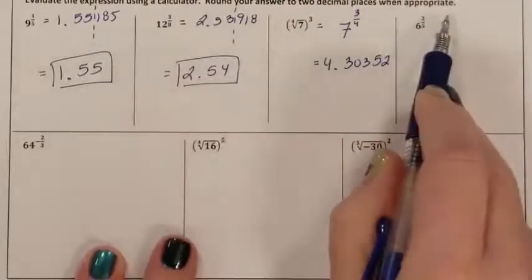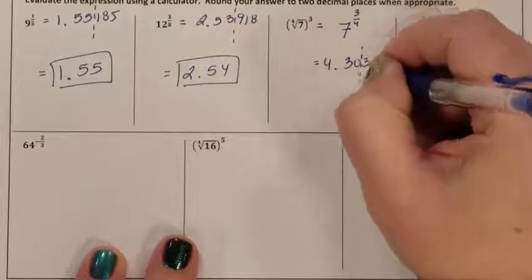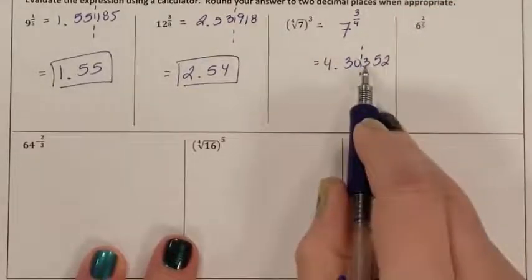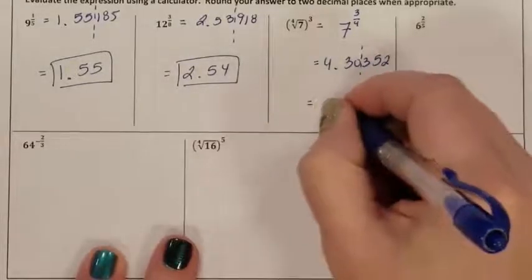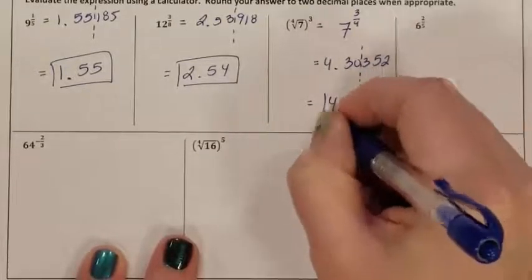But I'm supposed to round it to two decimal places. So here is the second decimal place. The first number cut off was a 3. He's less than 5, so he's going to tell the 0 to stay where you are. So my rounded number is 4.30.